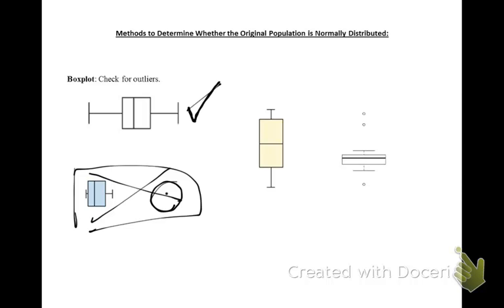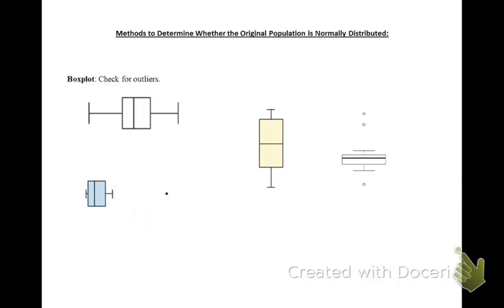These are horizontal box plots. I've also given you two vertical box plots. This box plot looks like your data could come from an originally normal population because there's no outliers. Whereas in this one, there's outliers above and below the box plot, so you would say your data probably does not come from an originally normal population.